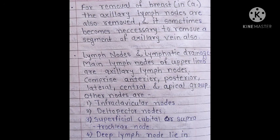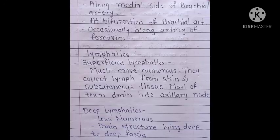The main lymph nodes of the upper limb are the axillary lymph nodes, which comprise anterior, posterior, lateral, central, and apical groups. Other nodes besides the axillary lymph nodes include infraclavicular nodes, deltopectoral nodes, superficial cubital or supratrochlear nodes, and deep lymph nodes that lie along the medial side of the brachial artery at its bifurcation and occasionally along the arteries of the forearm.